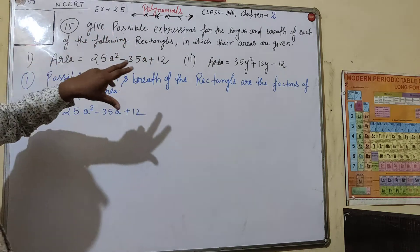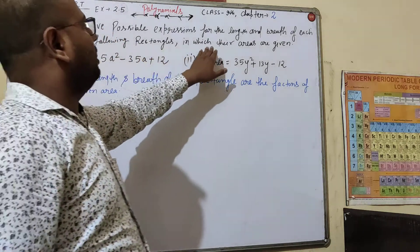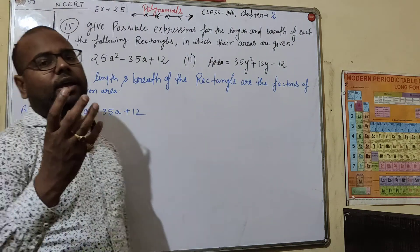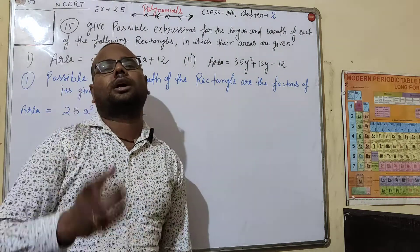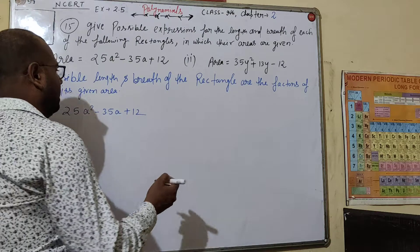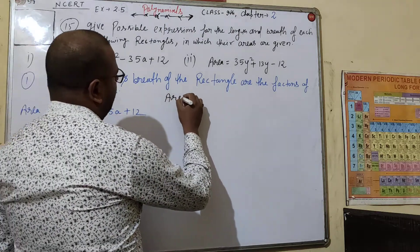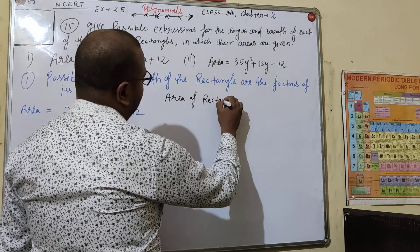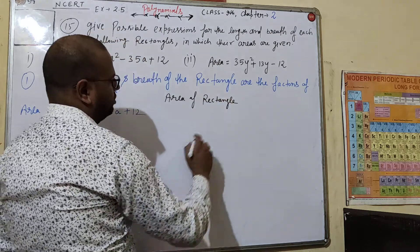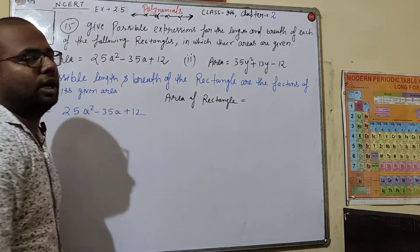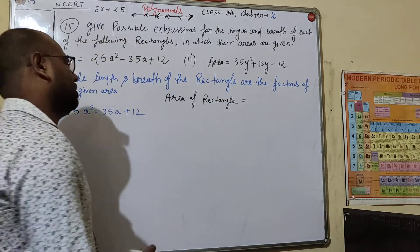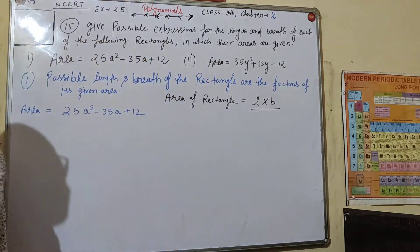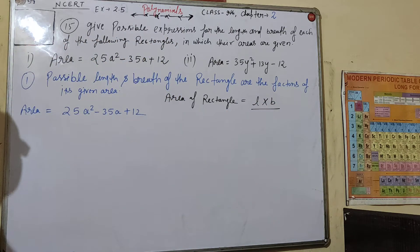We are given areas and have to find length and breadth. The area of a rectangle is length into breadth — that means area equals L into B. So if we factor the given expression, we will get two things: one is the length and the other is the breadth.